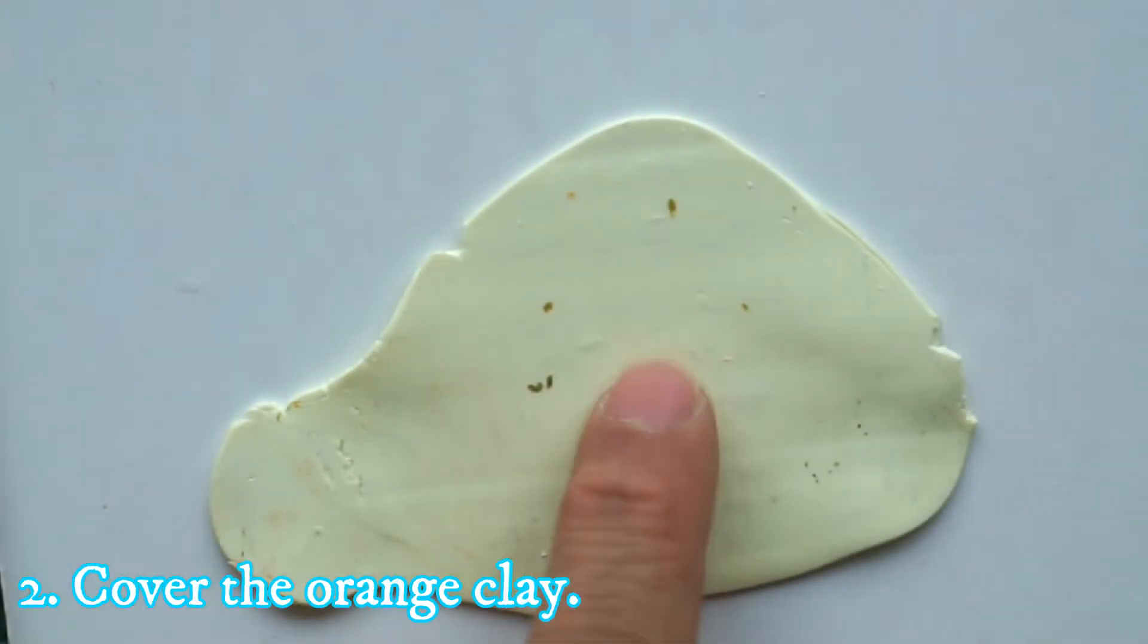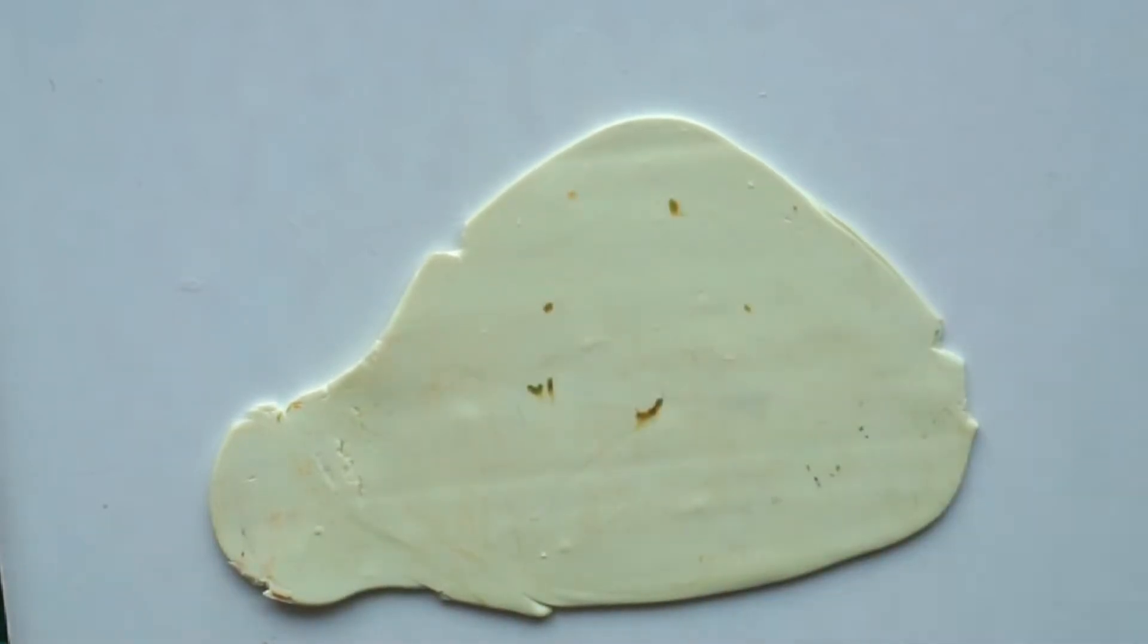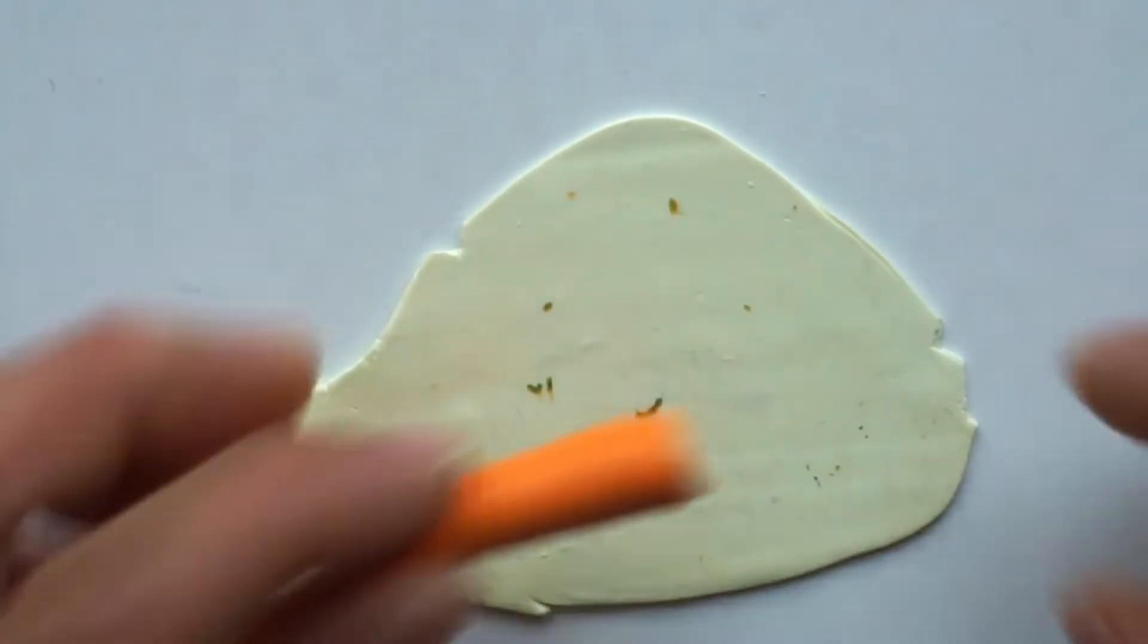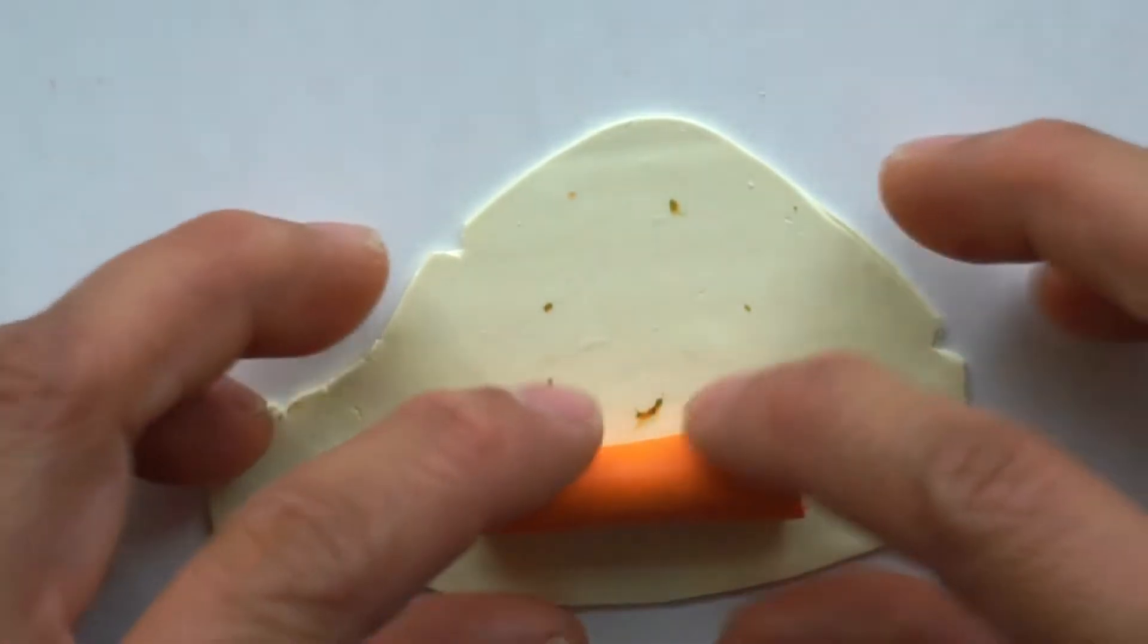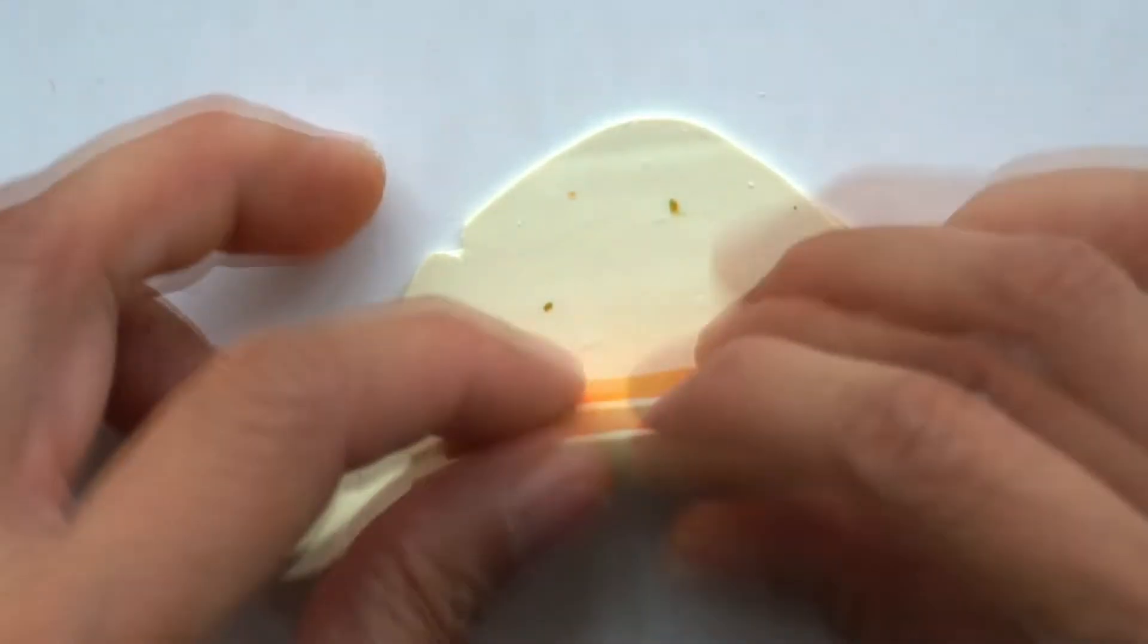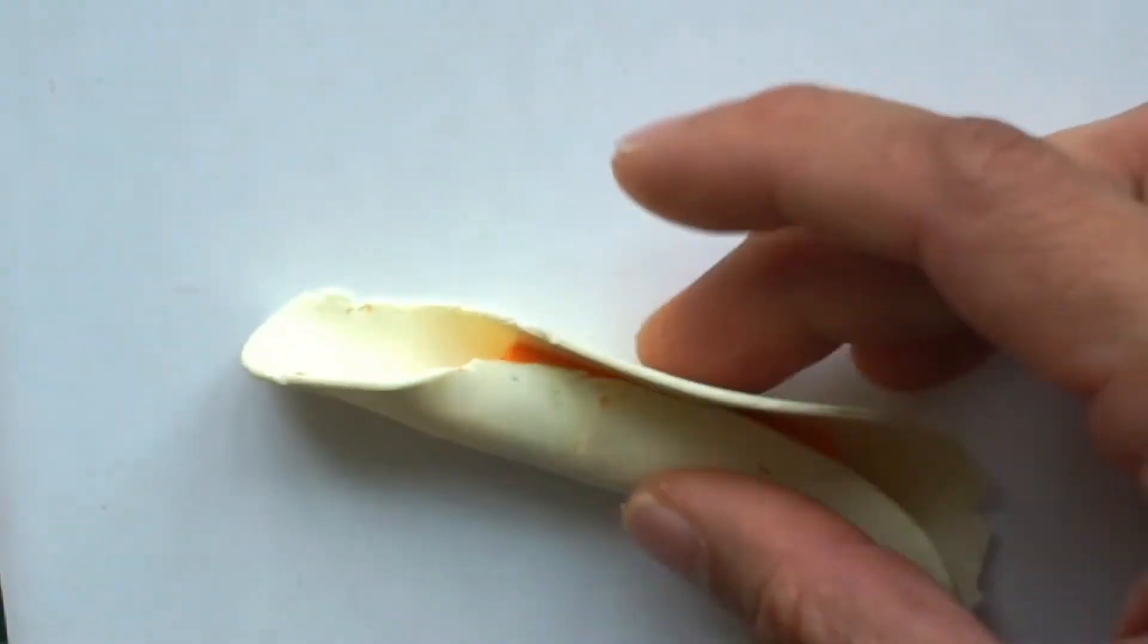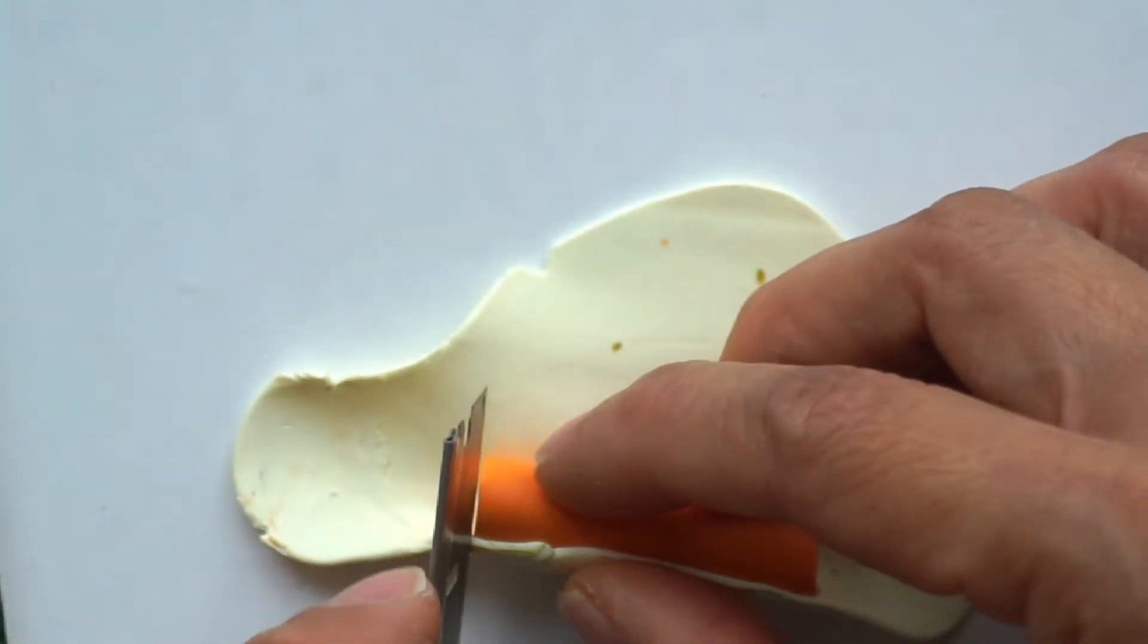Next, we are going to cover the orange lug with the yellow mixture. As you can see I had some clay build up from the clay machine but no worries as this part goes under. So cover the orange clay with the yellowish clay and remove the excess clay.